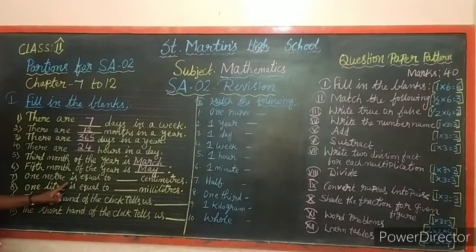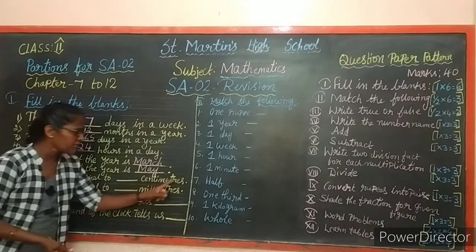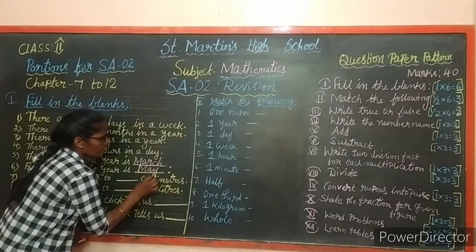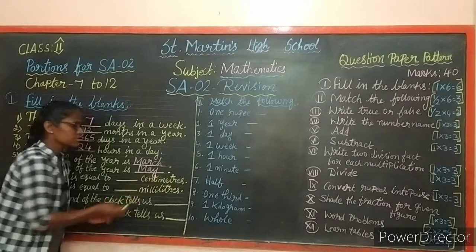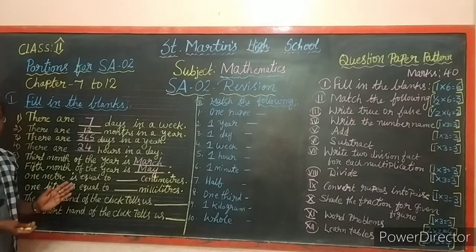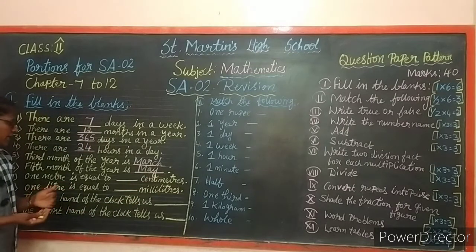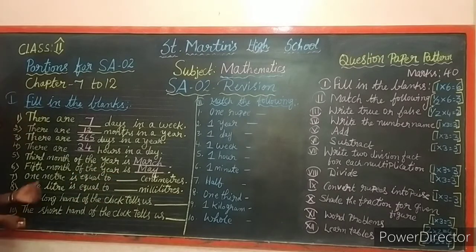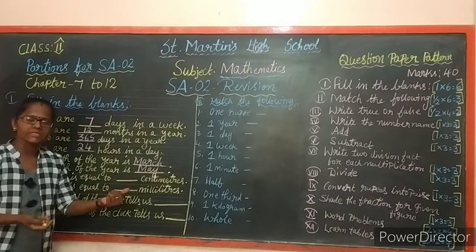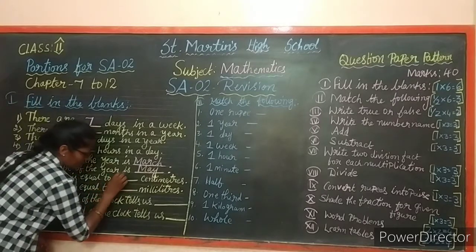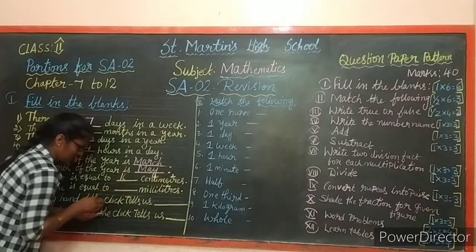Next: one meter is equal to dash centimeters. If you want to measure cloth, we use meters and centimeters. One meter is equal to 100 centimeters.